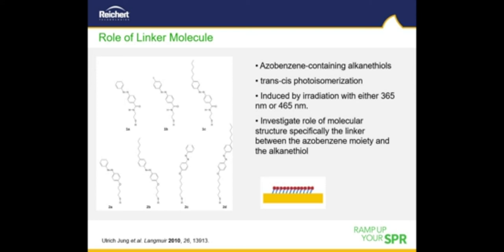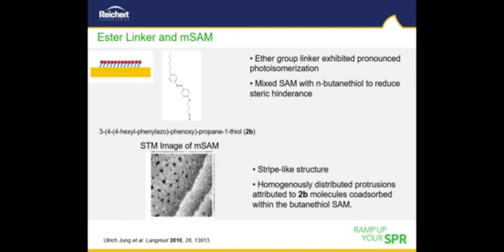In this study, a series of azobenzene derivatives were investigated that undergo cis-trans isomerization when illuminated with UV or blue light. Specifically, the role of the linker molecule between the azobenzene and the alkane thiol unit was probed to determine the optimal linker length for the azobenzene SAM surfaces. It was found that the ester linkage exhibited a pronounced photoisomerization, so mixed SAM surfaces with this linker and N-butanethiol were created to reduce steric hindrance. An STM image of this SAM surface shows a stripe-like structure with homogeneously distributed protrusions resulting from the azobenzene molecules being co-absorbed within the butanethiol SAM.